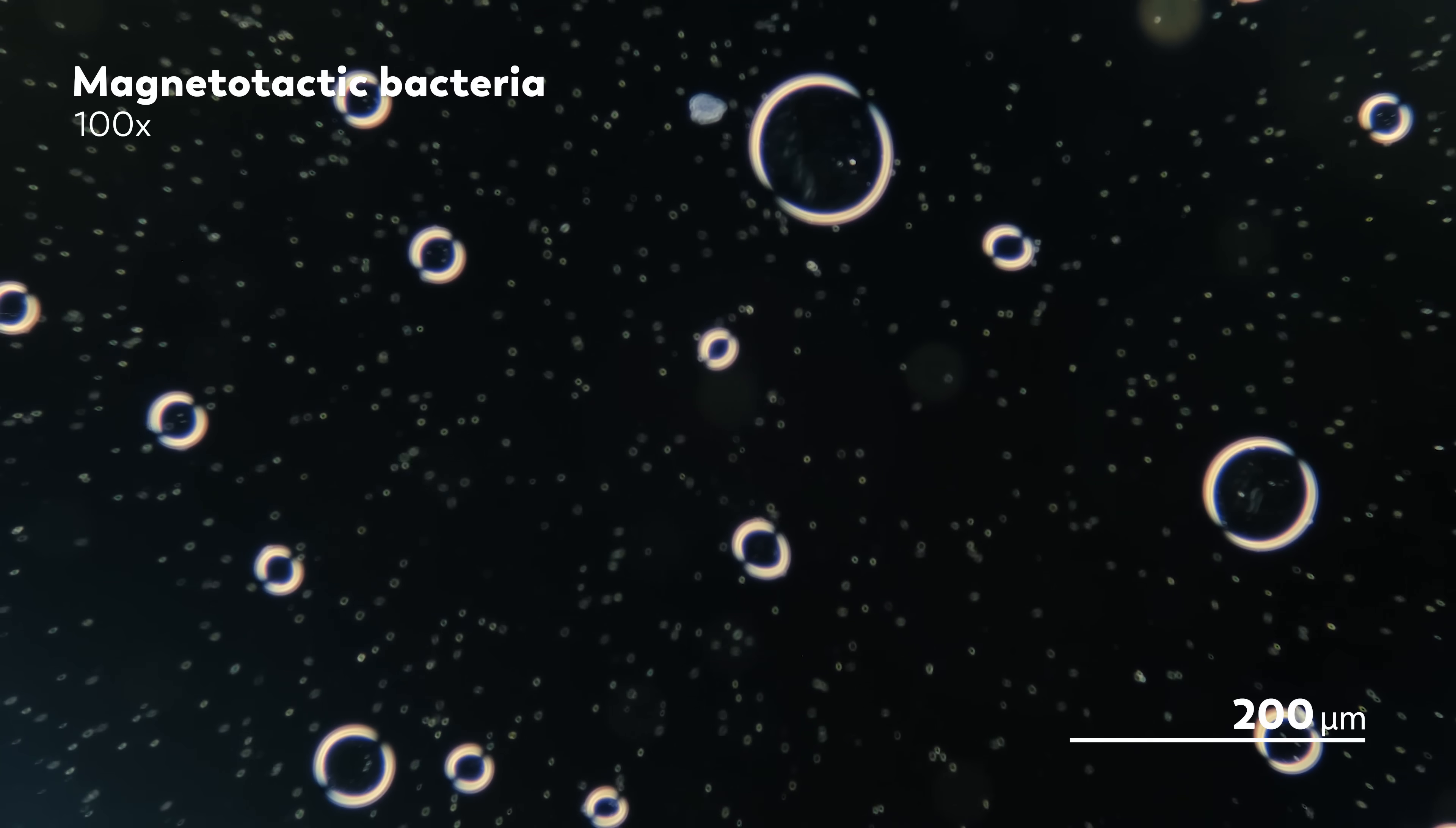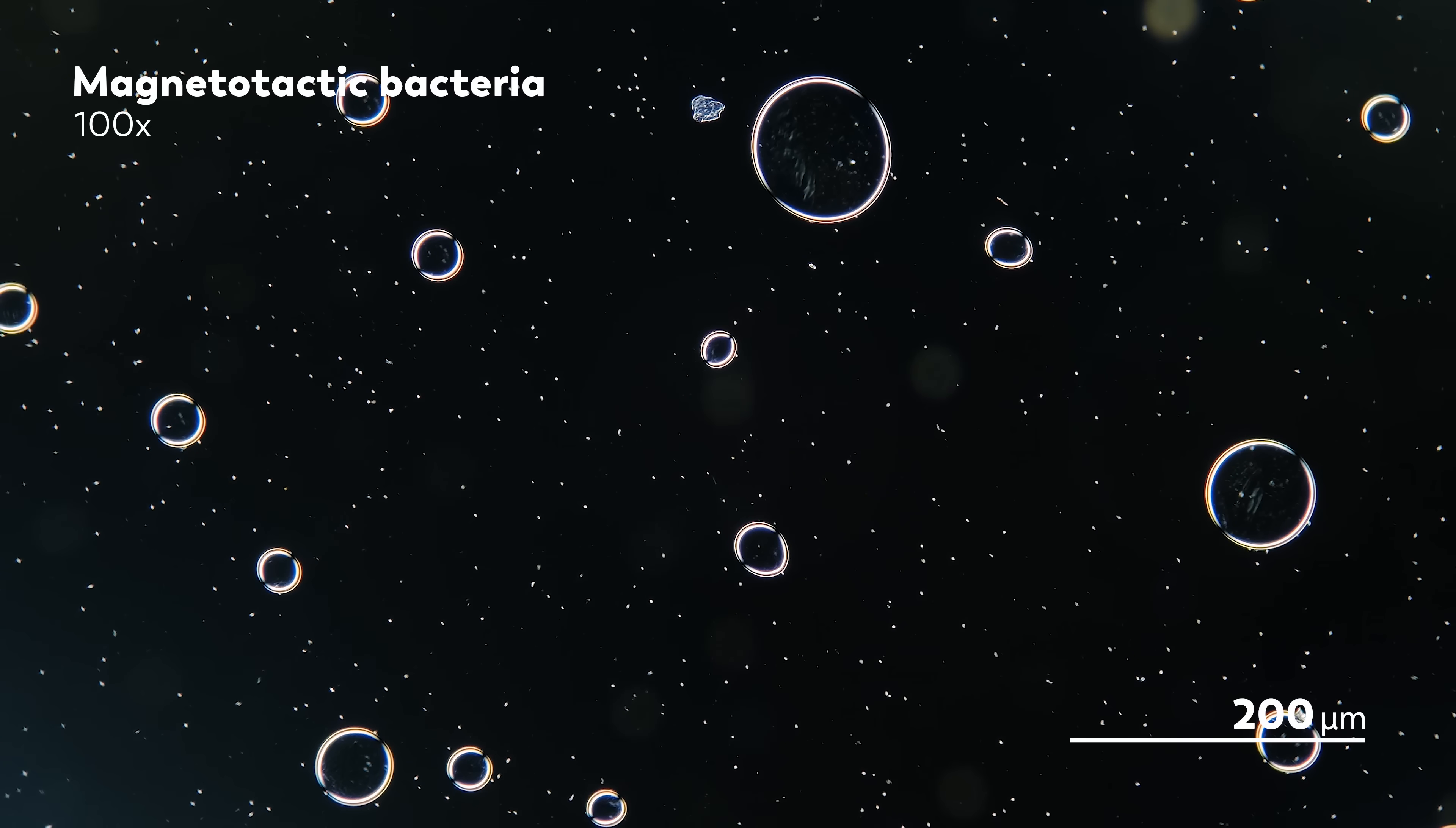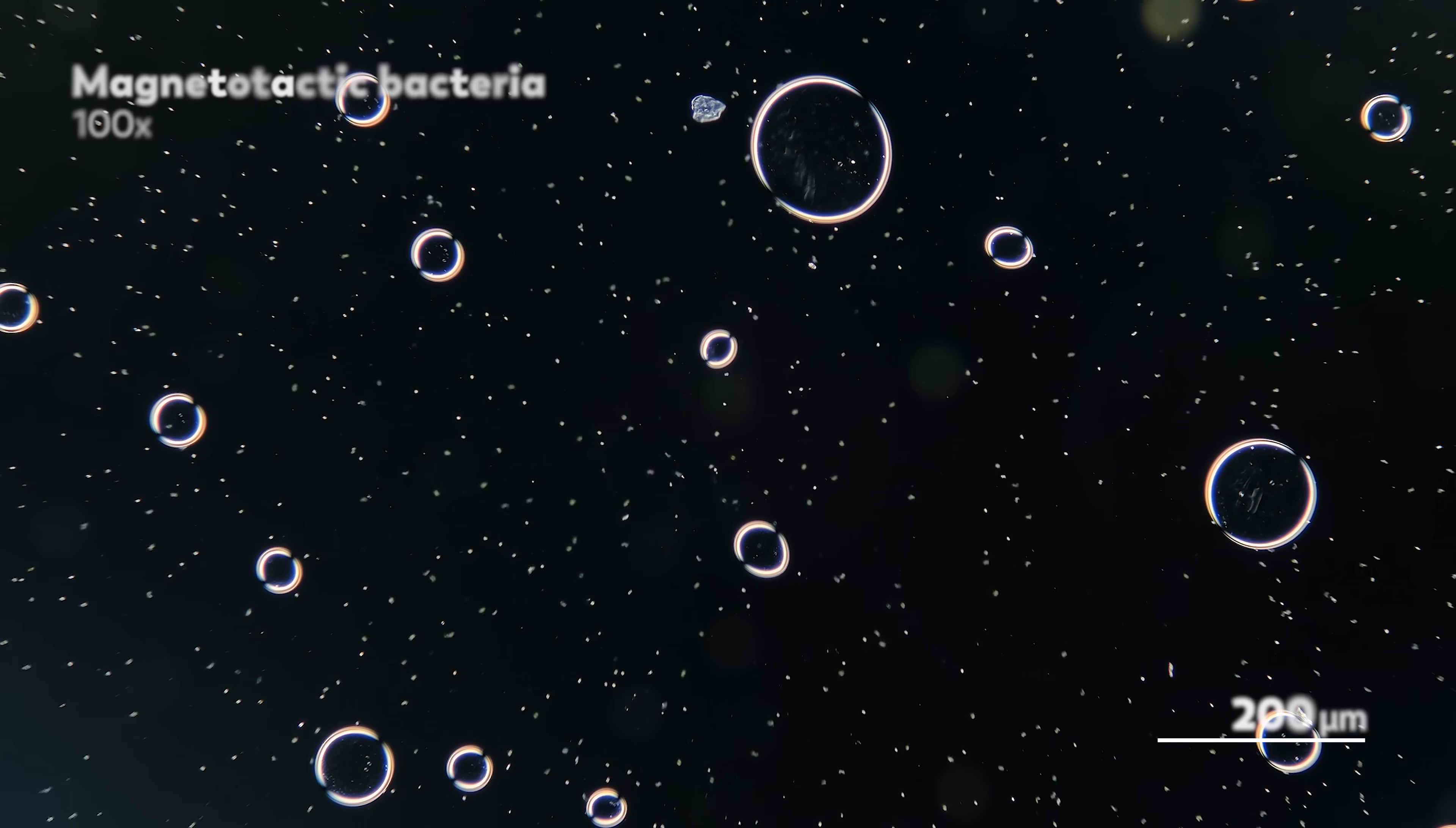There are many other mysteries to magnetotactic bacteria, like what advantages magnetism even gives them, whether it's to find the right habitat in the water, or to hunt down particular nutrients, or a combination of different factors. And the bacteria probably don't know why they move this way either. It is simply baked into them, a crystal that draws them into invisible tracks. They are mysterious and enigmatic. You might even call them magnetic.